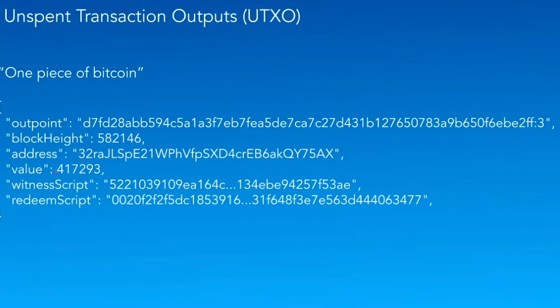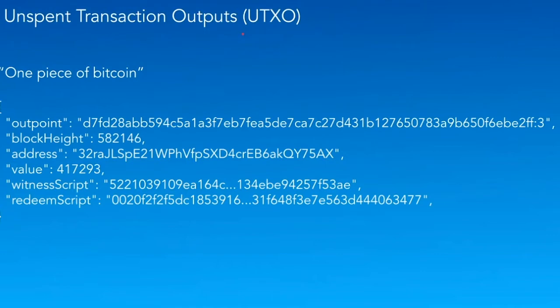Other people might notice there's a witness script here, so this is a pay-to-script-hash wrapped segwit output. I'm going to talk a lot about UTXOs — I might also call them 'unspends' or 'unspent transaction outputs.' That's all the same thing. Essentially, when you hear me say that, think of it as one piece of Bitcoin.